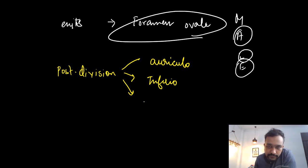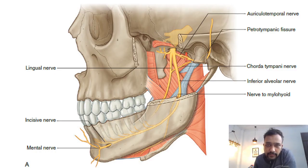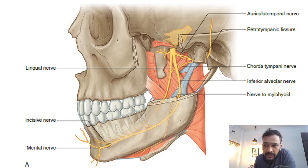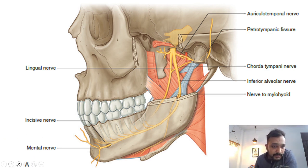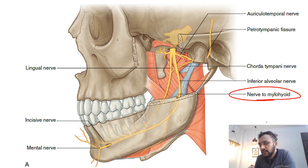The auriculotemporal nerve is sensory, supplying the skin over the ear. The inferior alveolar nerve passes through the inferior alveolar foramen and gives a branch — the nerve to mylohyoid.